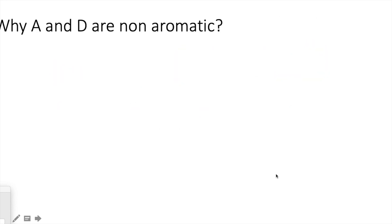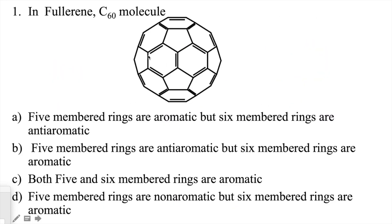The next question asked: in the fullerene C60 molecule, which rings are aromatic and which are non-aromatic or anti-aromatic? Based on carbon NMR studies performed on this molecule, it was found that the six-membered rings are aromatic and the five-membered rings are anti-aromatic. So the answer is: five-membered rings are anti-aromatic and six-membered rings are aromatic.